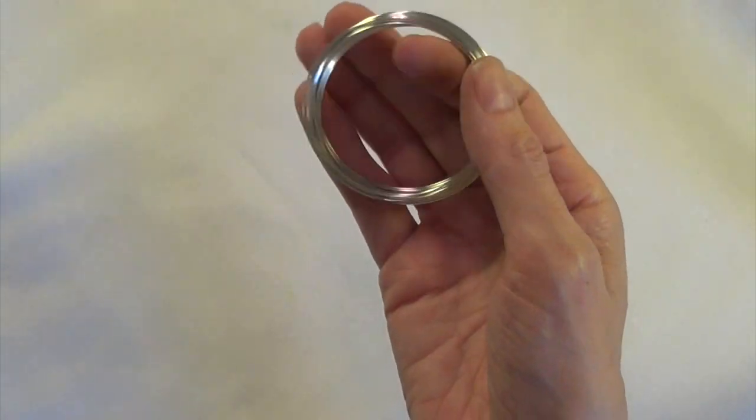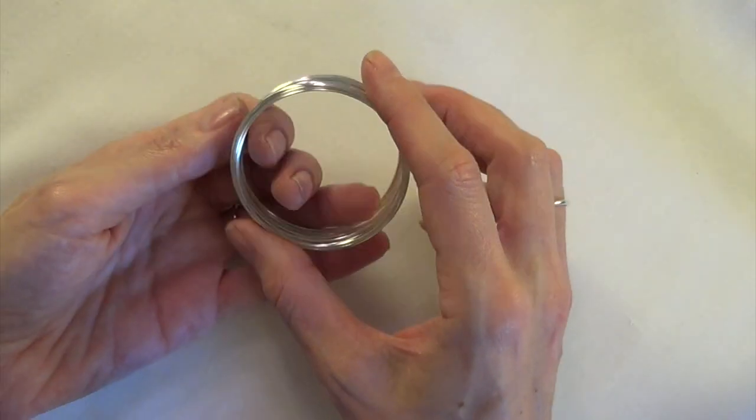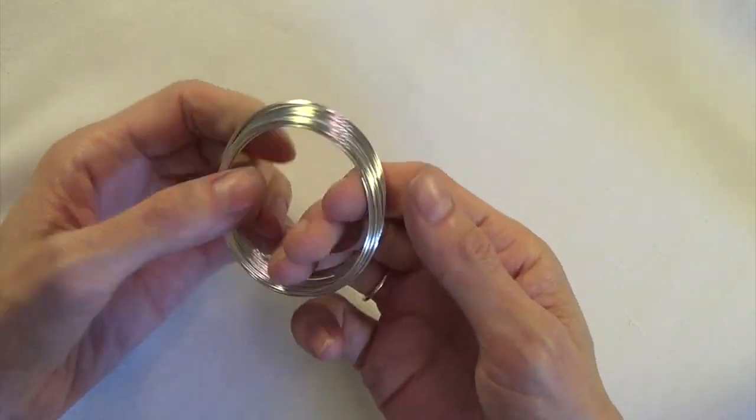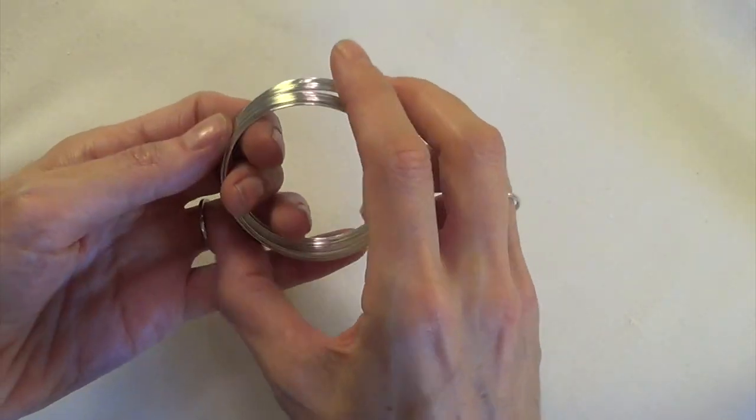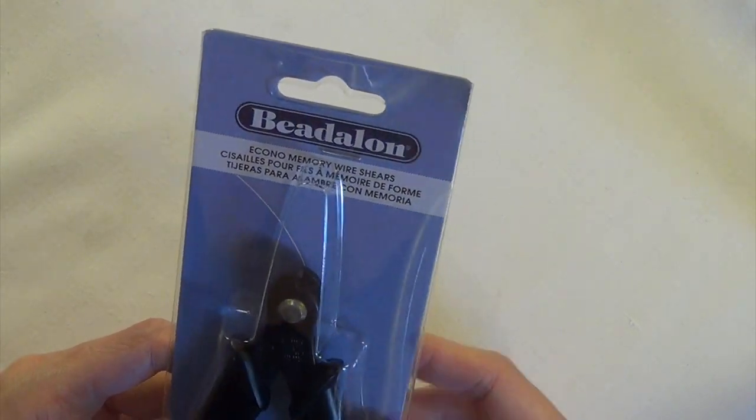You'll need the bracelet size memory wire coil for this project, and I'm using a silver plated version because I'm going to add some sterling silver charms, but any finish that you want to use will do.